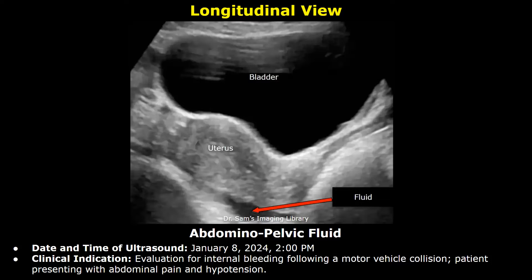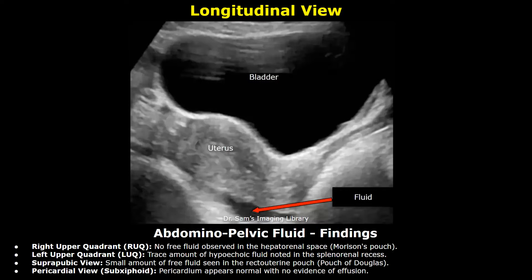Following a motor vehicle collision, patient presenting with abdominal pain and hypotension. Findings — Right upper quadrant: no free fluid observed in the hepatorenal space (Morrison's pouch). Left upper quadrant: trace amount of hypoechoic fluid noted in the splenorenal recess. Suprapubic view: small amount of free fluid seen in the recto-uterine pouch (pouch of Douglas). Pericardial view: subxiphoid view pericardium appears normal with no evidence of effusion.